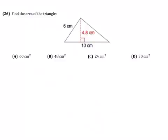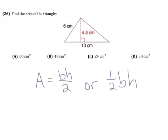Question number 26. Find the area of the triangle. So we need to remember our area formula. Area of a triangle is base times height divided by 2, or we could use one half times base times height.